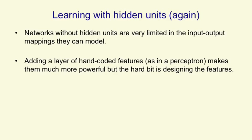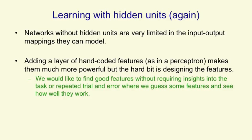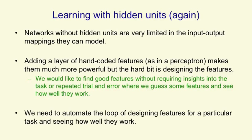The learning won't solve the hard problem — you have to solve it by hand. What we'd like is a way of finding good features without requiring insights into the task or repeated trial and error where we guess some features and see how well they work. In effect, what we need to do is automate the loop of designing features for a task and seeing how well they work. We'd like the computer to do that loop instead of having a person in the loop.